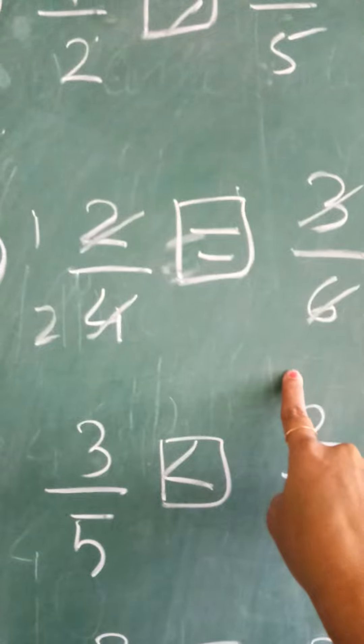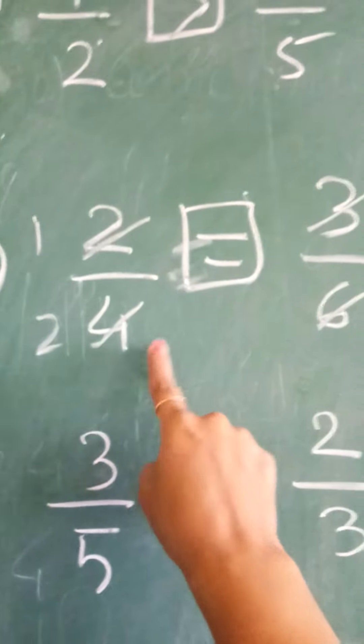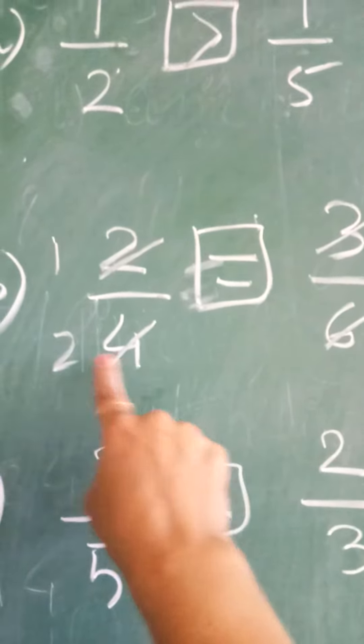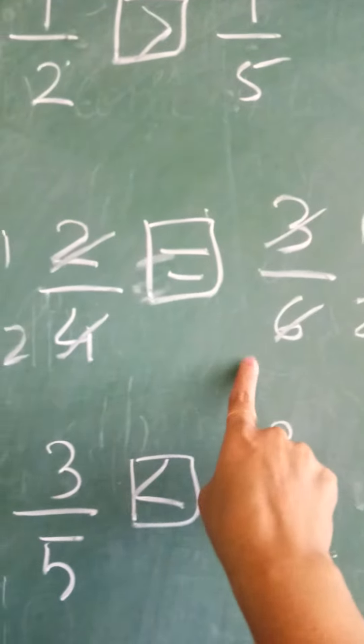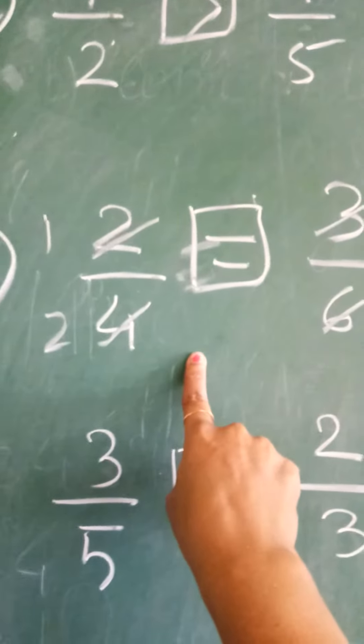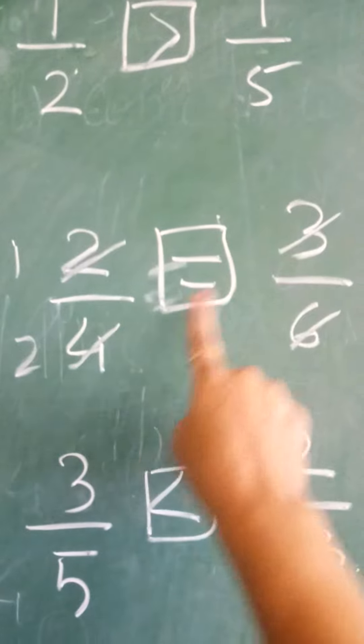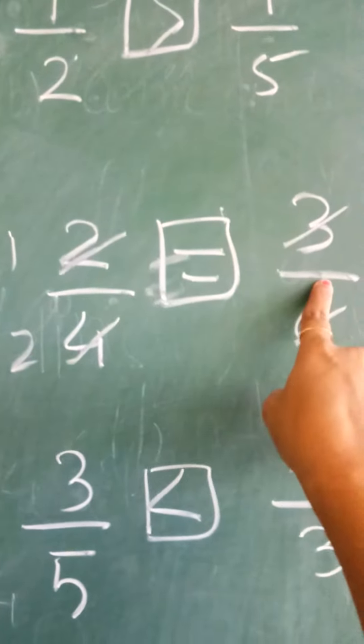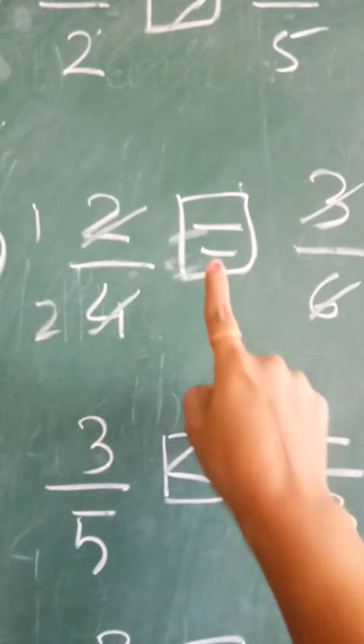Same way, 2 upon 4, 3 upon 6. For 2 upon 4, you can simplify this to 1 upon 2 equals. If you cross multiply, 6 times 2 is 12, 4 times 3 is 12. Both sides are 12, which means equal to.